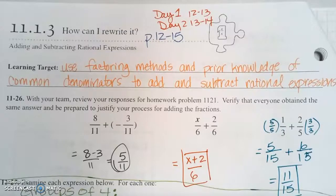Problem 11.1.3 is titled 'How can I rewrite it?' and the subtitle is adding and subtracting rational expressions. We will use factoring methods and prior knowledge of common denominators to add and subtract rational expressions.